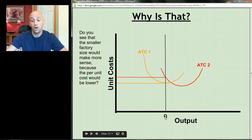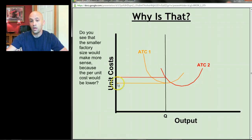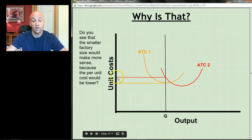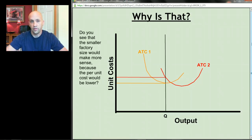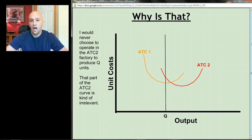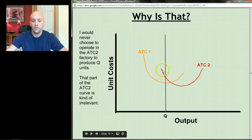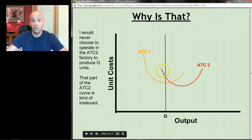At this quantity, if I use the smaller orange factory, my average total costs would be lower. If I produce the same quantity using the larger red factory, the average total cost curve shows my costs would be higher. I'd rather produce at a lower average cost if I can. Since I would never choose to operate in the larger red factory to produce that quantity, that portion of the red ATC curve is irrelevant — I can essentially erase it.